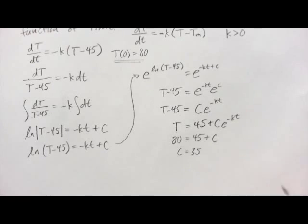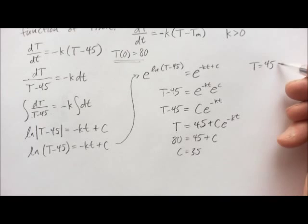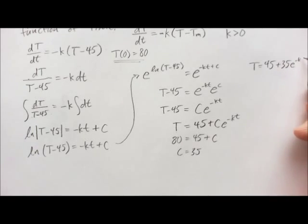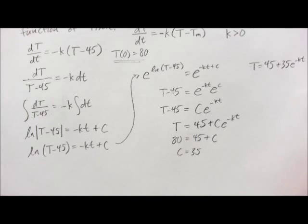All right, so that means our equation then looks like T equals 45 plus 35 E to the minus KT. When T is zero, we get 45 plus 35, which is 80, so that's good.